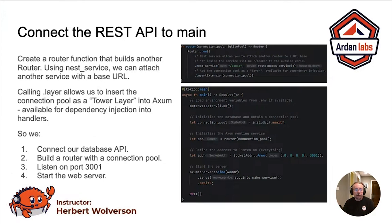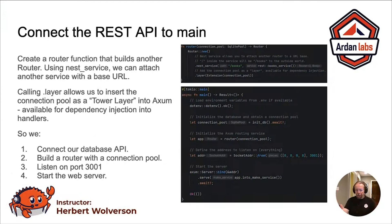In the main function, we still have .env getting our environment variables set up, and we still build the connection pool. We call the router to make the app, and the one last thing we're doing is calling .layer, which adds a dependency injection layer to our Axum server. In this case, we're putting the connection pool into the web server. Now any web server function that includes it in its parameters will automatically get the connection pool, so we don't have to worry about making it static or sharing it.